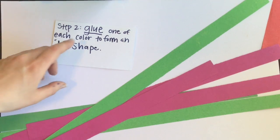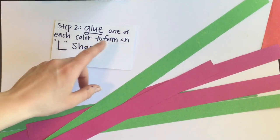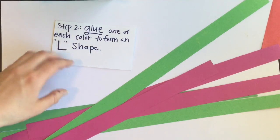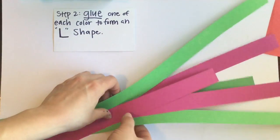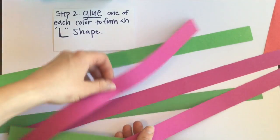Step two, you're going to glue one of the strands of each color to form an L shape. So I'm gonna take a green one and a magenta one.